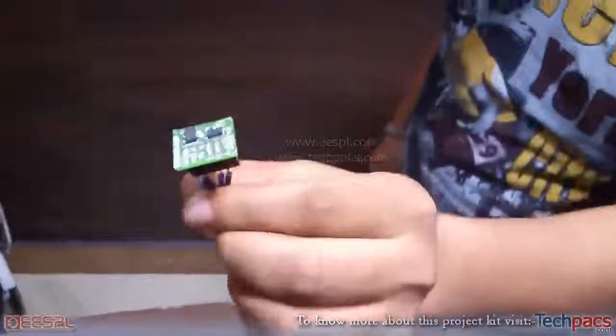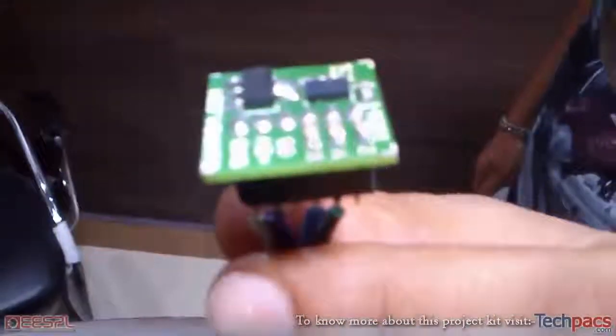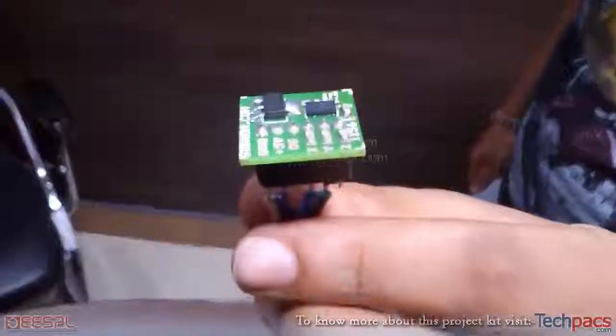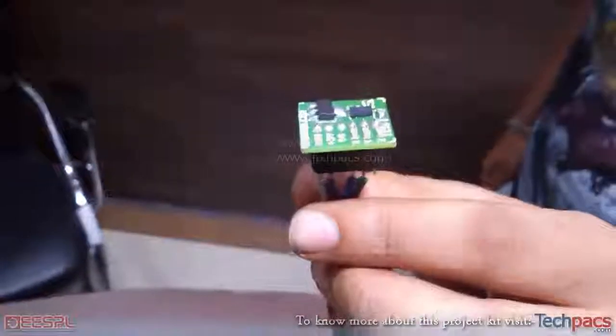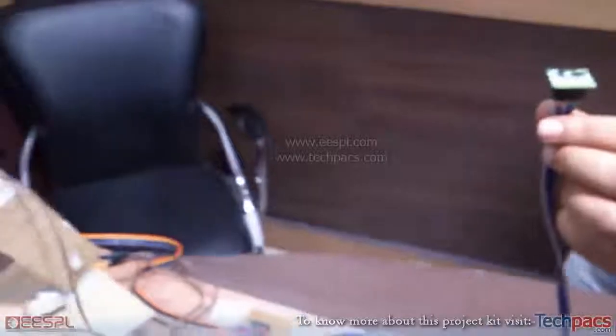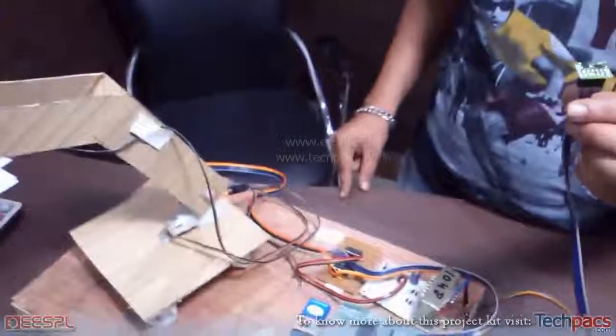So you can just see this small chip which has basically mercury embedded into it. So with the movement of my hands or with the movement of this device this particular project is going to work. Now first of all let me complete the section of this particular project.